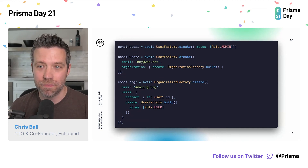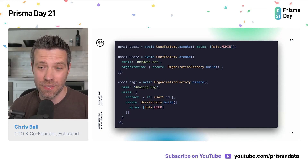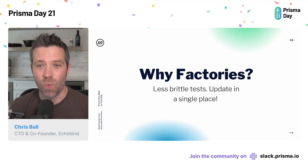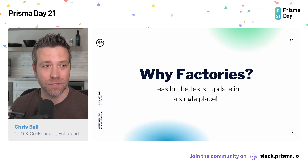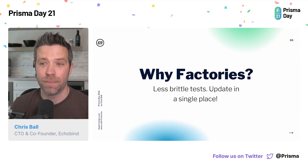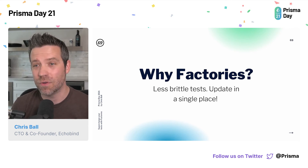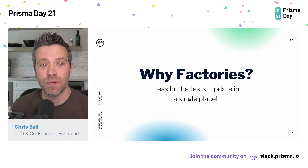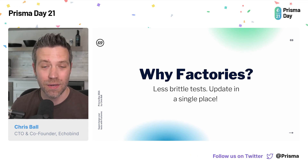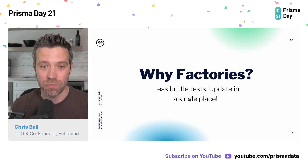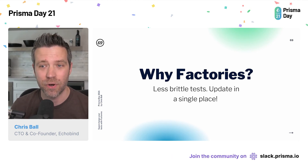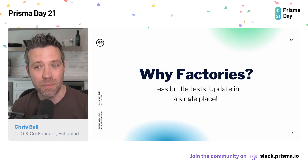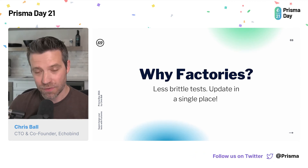Those are the benefits we get mainly due to the power of Prisma. Why else might you want to use factories this way? Let's say you go in and add a new required field on a user called phone. Instead of searching across your entire test suite trying to find every time you create a user and adding phone to that, you just update the factory and say phone is a required attribute in this format. You can use the faker library to randomize it. That's it — you just update it in one spot.